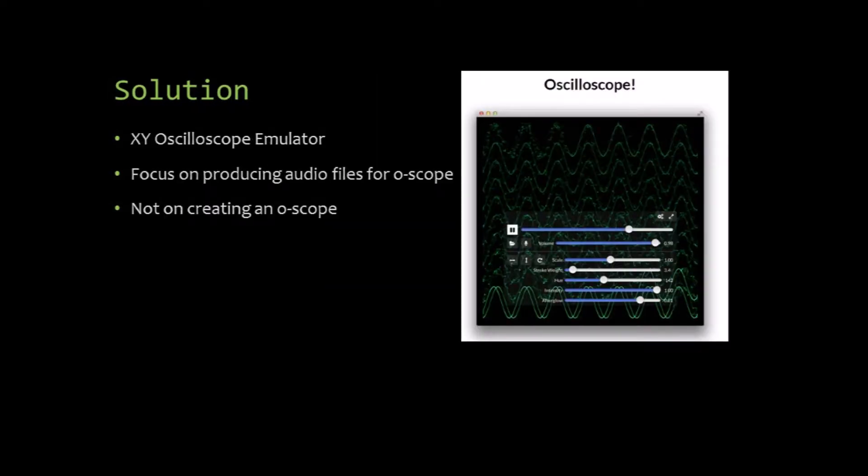After all of these problems, I was eventually able to find a pretty simple solution, an XY oscilloscope emulator program that took audio as an input. Once I found this program, I switched from focusing on creating an oscilloscope to creating a way to produce an audio file from an image to display on an oscilloscope.